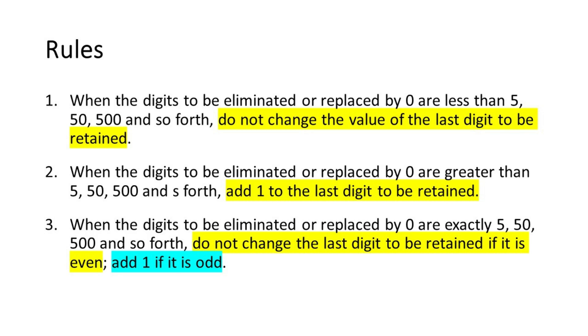Rule number 3: when the digits to be eliminated or replaced by 0 are exactly 5, 50, 500, and so forth, do not change the last digit to be retained if it is even; add 1 if it is odd.